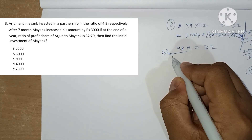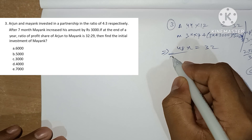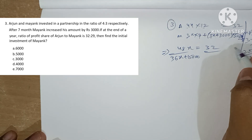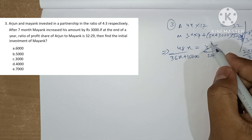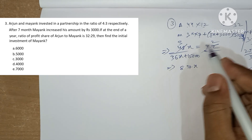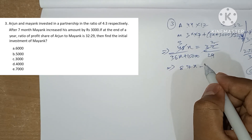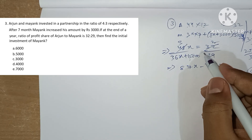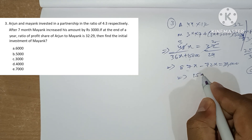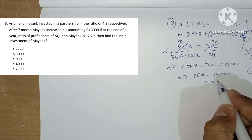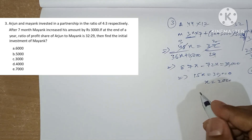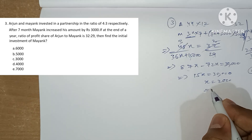Solving the equations: 48x corresponds to 32 and (21x + 15000/x portion) corresponds to 29. Working through: 72x equals 30000, so 15x equals 30000 giving x equals 2000. The question asks for Mayank's initial investment, which is 3x, so 3 times 2000 equals 6000. Option A is our answer.